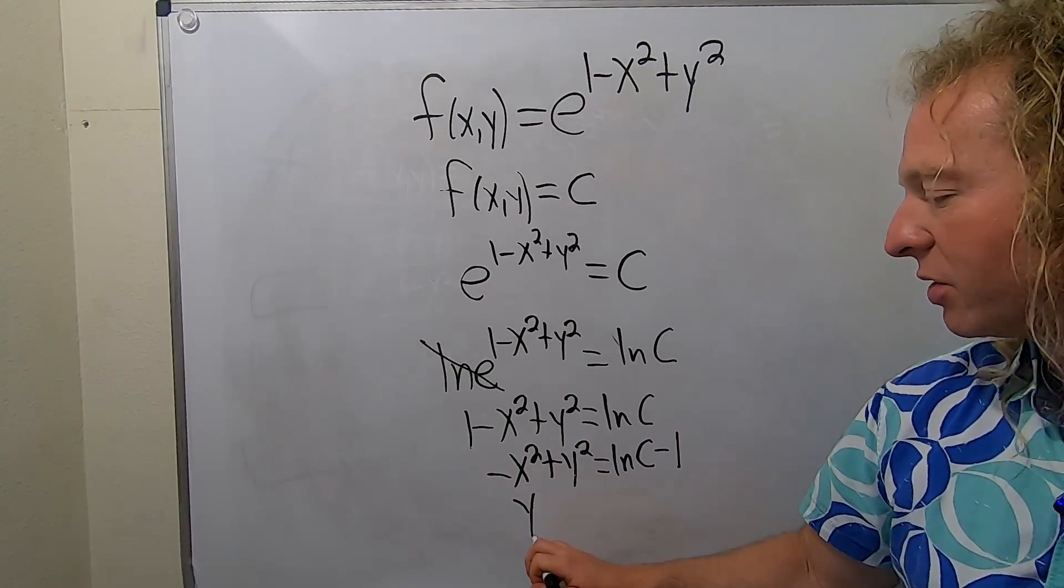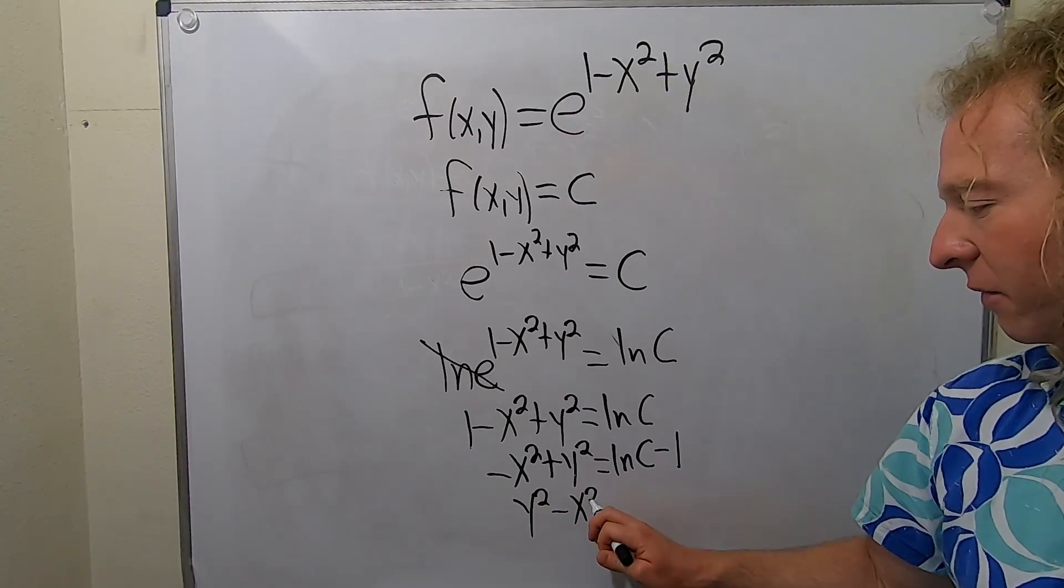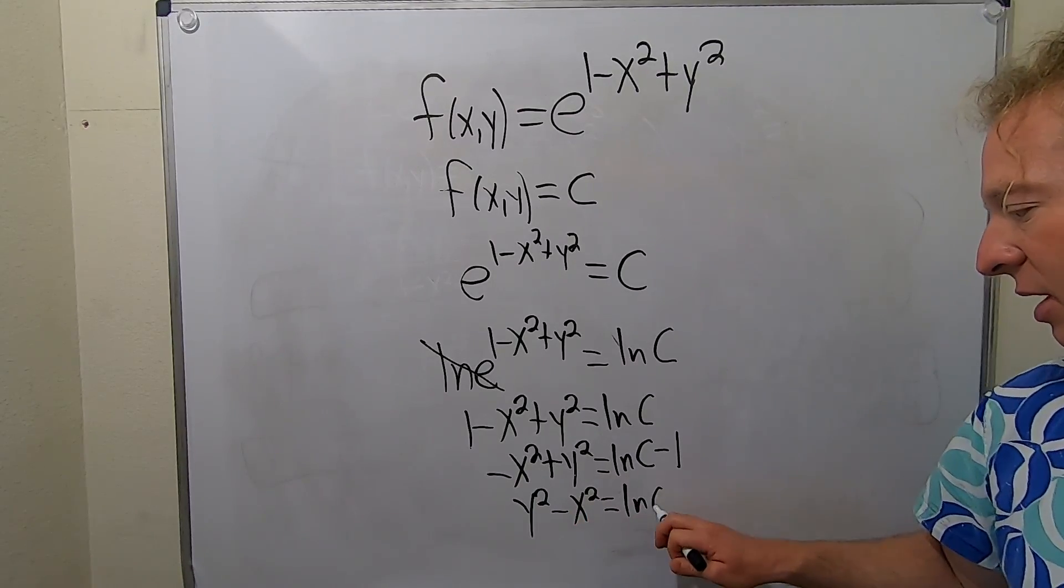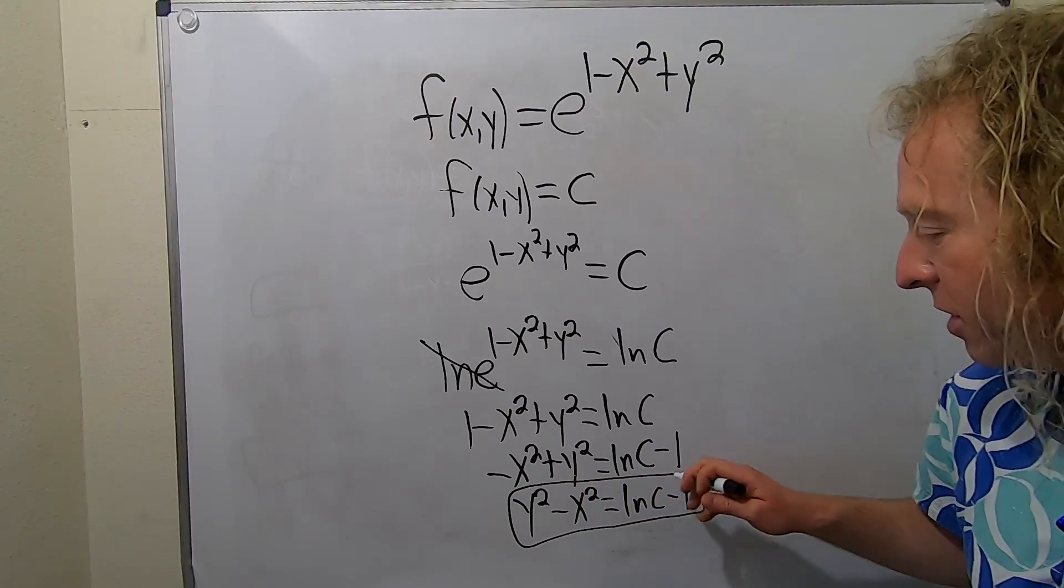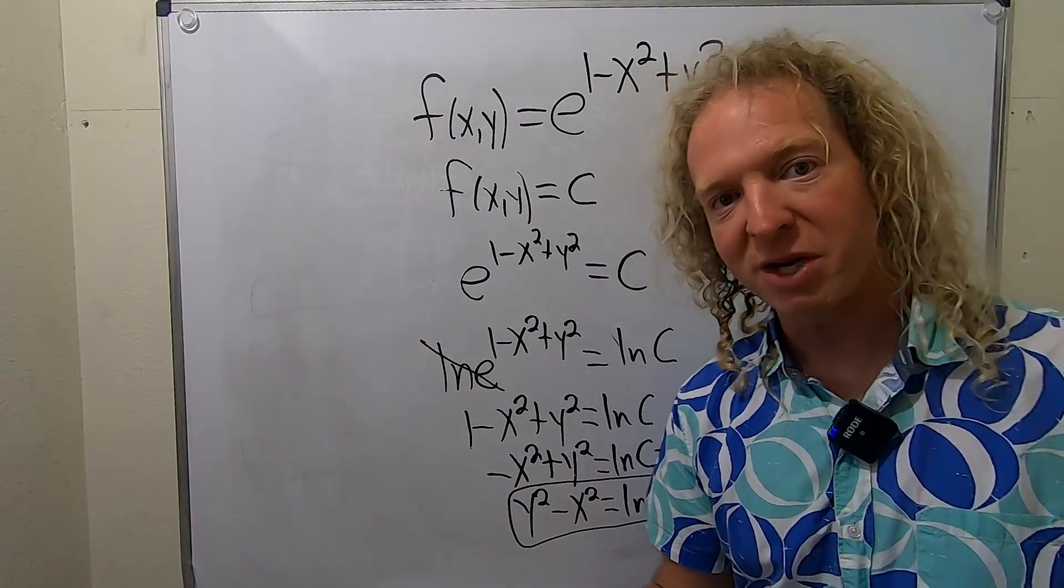You can rewrite this as y squared minus x squared equals ln c minus 1. And so those are the equations of the level curves. And now you can see that they are two-dimensional curves.